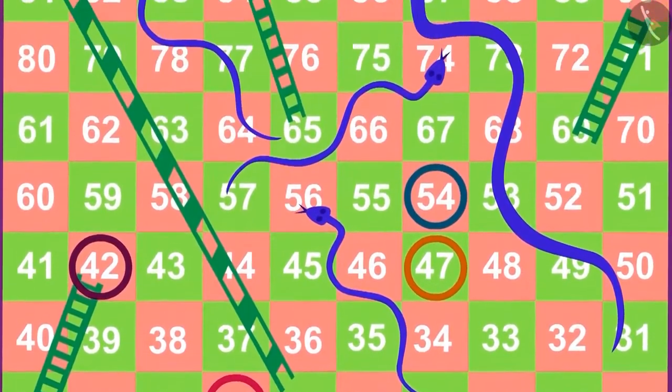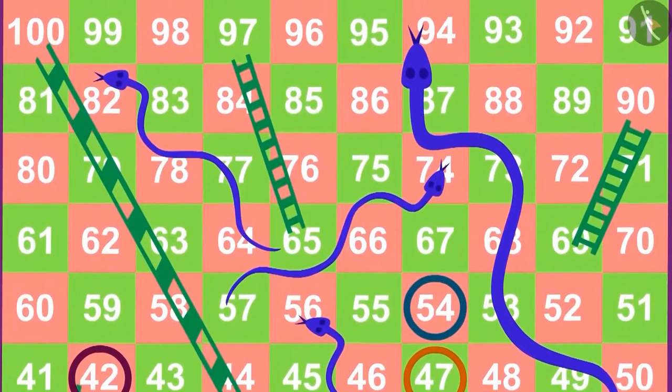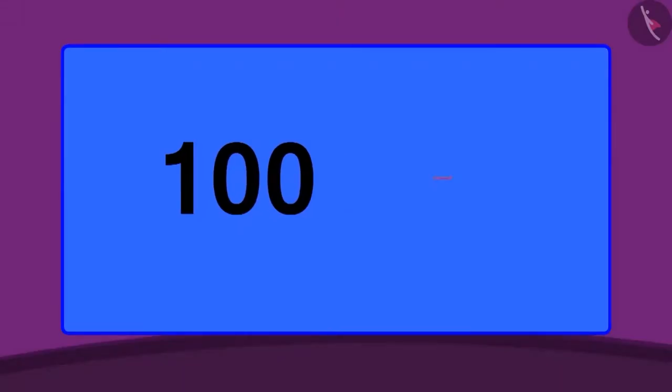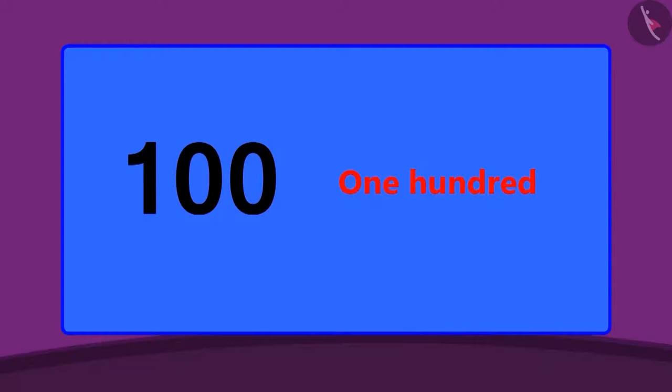So far we have learnt about 2 digit numbers. In this lesson we will learn about 3 digit numbers. The count of 3 digit numbers starts from 100. Do you know that 100 runs in the game of cricket is also called a century?